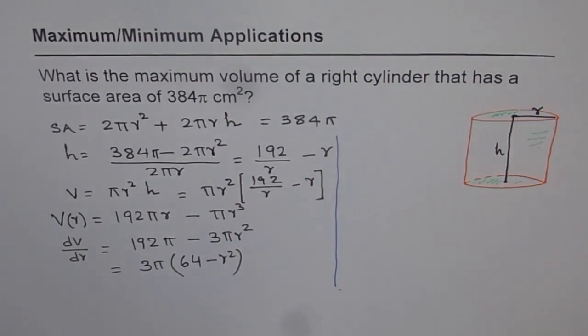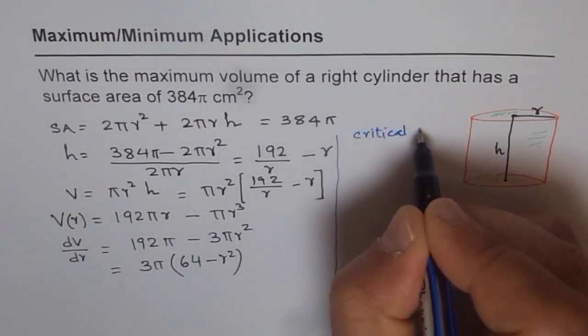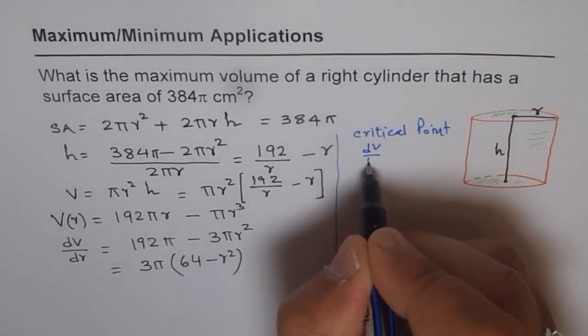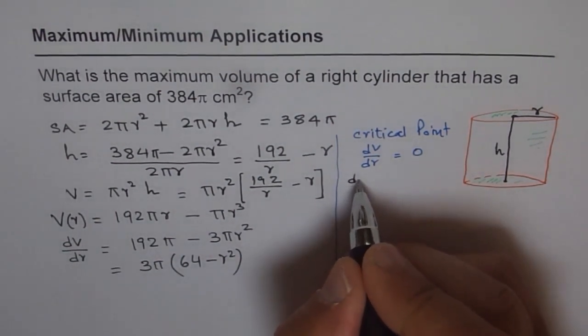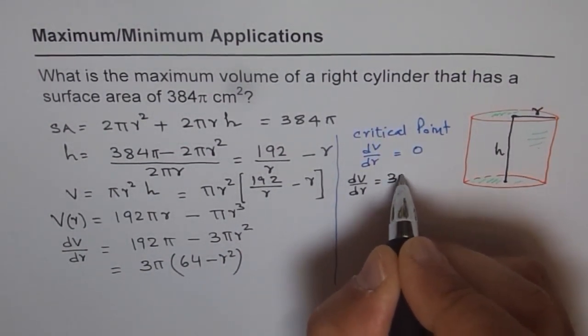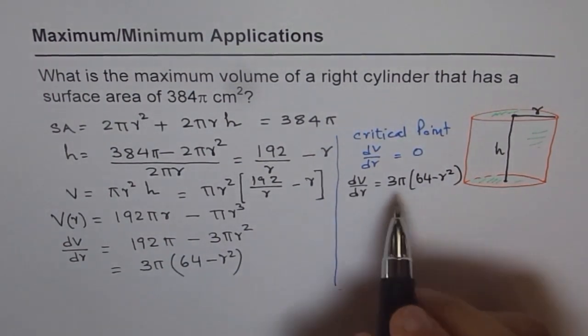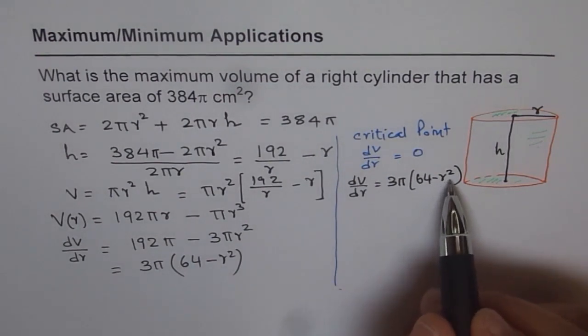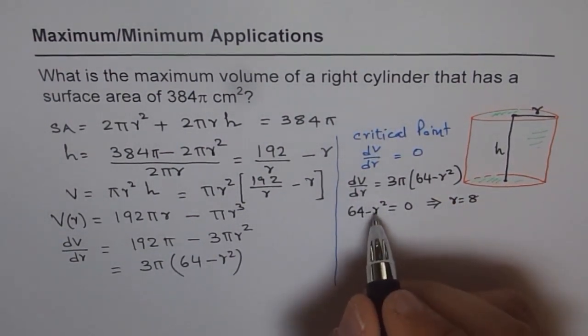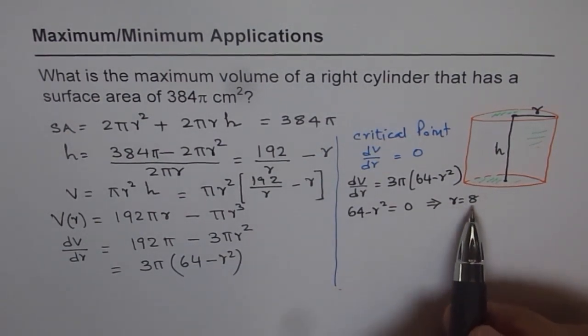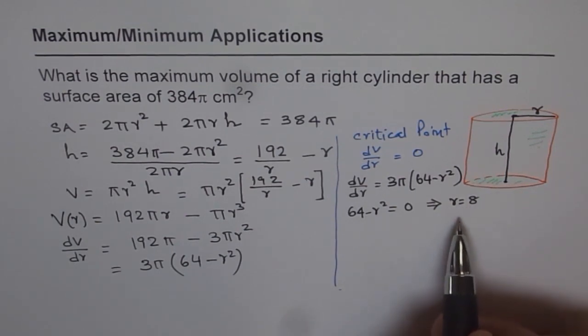Now we have to find the maximum volume. To find the maximum volume, we will find the critical point, which is when dV/dr equals 0. So dV/dr is 3π(64 - r²). For this to be 0, 64 - r² should be 0. So 64 - r² = 0 gives us r = 8. We have to take only the positive value in dimensions for geometrical shapes. So r = 8 is our answer as a critical point.